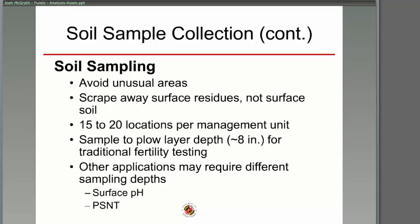Avoid unusual areas — you're fertilizing toward the average of the field, so don't target the really good or really bad areas. Scrape away surface residue first, especially in no-till fields. Take fifteen to twenty locations per management unit, sampling to the plow layer — eight inches in Maryland is the basis of our recommendation. For sulfur, take two depths, since deep sulfur can be very important. PSNT has to be a twelve-inch sample.